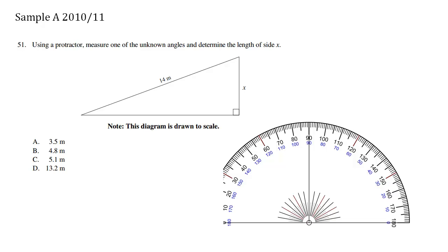Using a protractor, measure one of the unknown angles and determine the length of the side x. So we have a nice right angled, basic trig ratio triangle here. We're trying to use SOH CAH TOA to solve for this, and we need to know the angle.